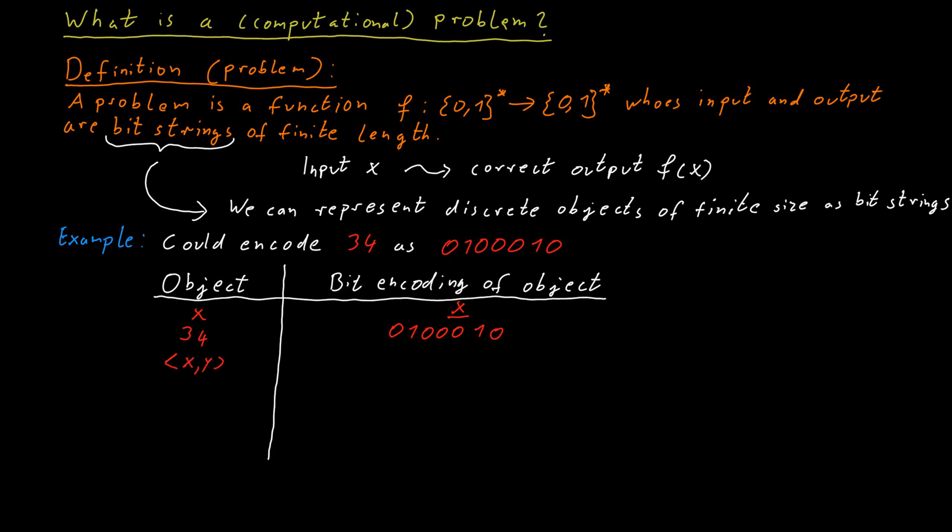So one way of encoding this in a single bit string would be to just take the bit encoding of x and the bit encoding of y and write them next to each other with some separator symbol. Now of course we cannot use that separator symbol because we should only use zeros and ones. So what we will do is we will re-encode this whole thing and we replace every zero by 00 and every one by 11 and the separator symbol by 01.